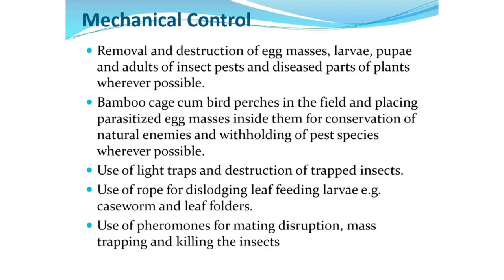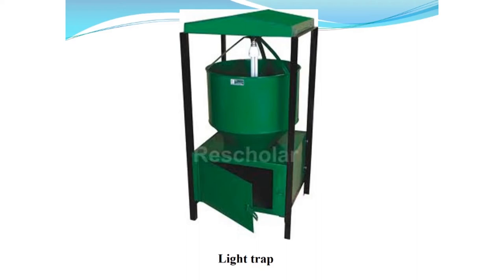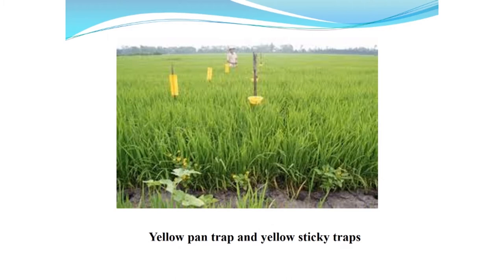Pheromone traps can be used to disturb mating, mass-trap insects, and ultimately kill them. A light trap consists of a funnel, a bulb, and a tray that collects insects for monitoring and killing to suppress pest populations. Many insects are attracted to yellow color, so yellow pan traps and yellow sticky traps placed at canopy level of different crops are used to destroy and monitor insects and plan pest management strategies.